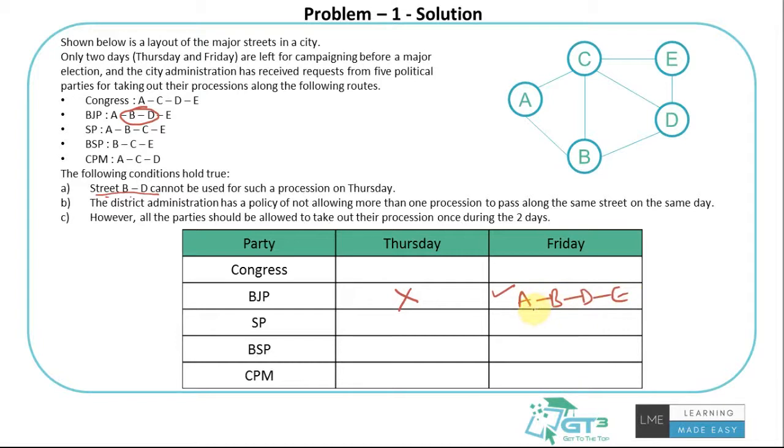Who else needs AB? Look at the list again. SP needs AB. So BJP has to do it on Friday because they need BD on Friday, so they're obviously occupying AB as well and DE. Who else needs AB? SP needs AB. So they cannot do it on Friday because it's already taken up by BJP. So SP has to do it on Thursday.